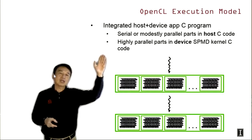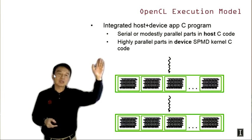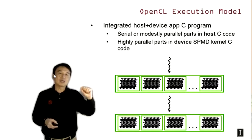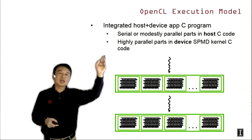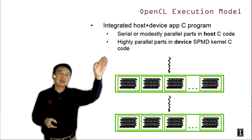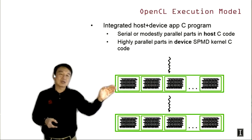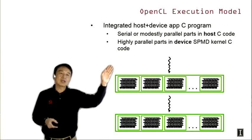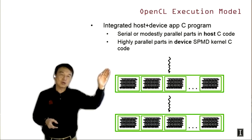The execution model of OpenCL is also extremely similar to CUDA — it is an integrated host-device application. Serial or modestly parallel code runs in host CPU code as a single fixed thread, while the highly parallelized parts run on the device using a large number of threads in SPMD (single program, multiple data) fashion, just like CUDA.